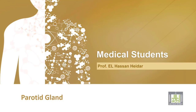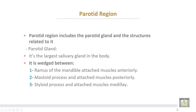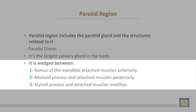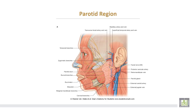The parotid gland and parotid region. The parotid region is the area which includes the parotid gland and the structures related to it. The parotid gland is the largest salivary gland in the body. It is wedged between the ramus of the mandible and the attached muscles anteriorly, the mastoid process of the skull and the attached muscles posteriorly, and the styloid process and the attached muscles medially.